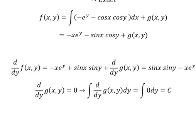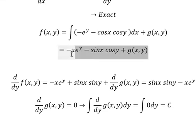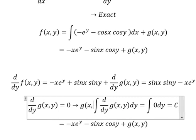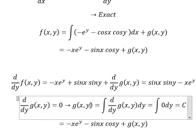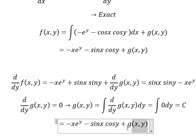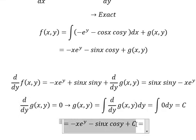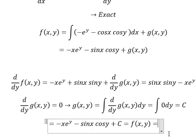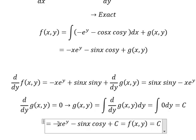Now we need to go back. The integration of dg/dy equals zero gives g(x,y) equals C, a constant. Therefore f(x,y) equals negative xe^y minus sinx cosy plus C.